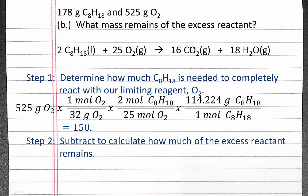In Step 2, we'll subtract how much of the excess reactant we used from how much we began with. We began with 178 grams of C8H18 and we used 150 grams in our reaction with oxygen. So we have 28 grams remaining of C8H18 at the end of the reaction after it's gone to completion.